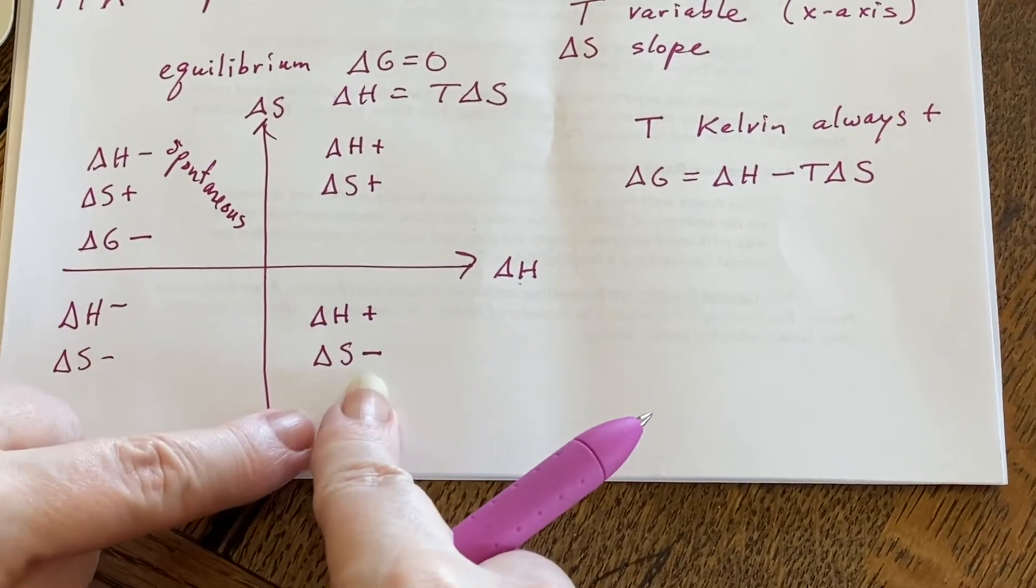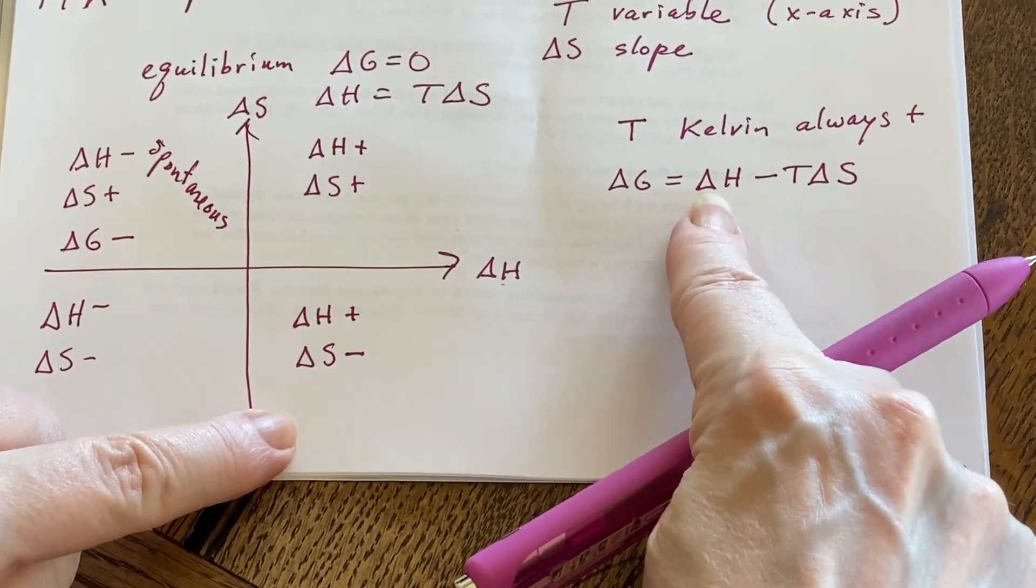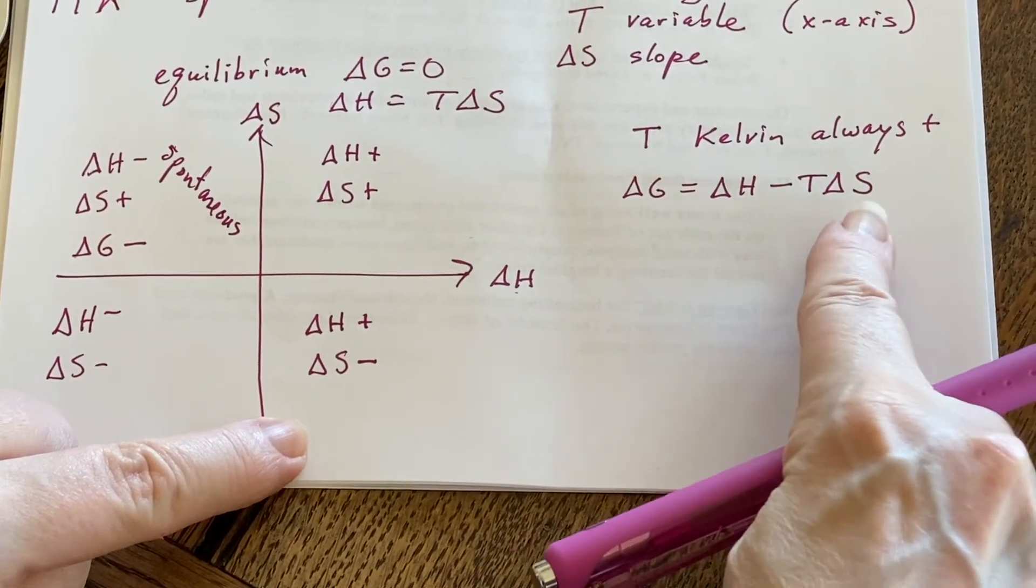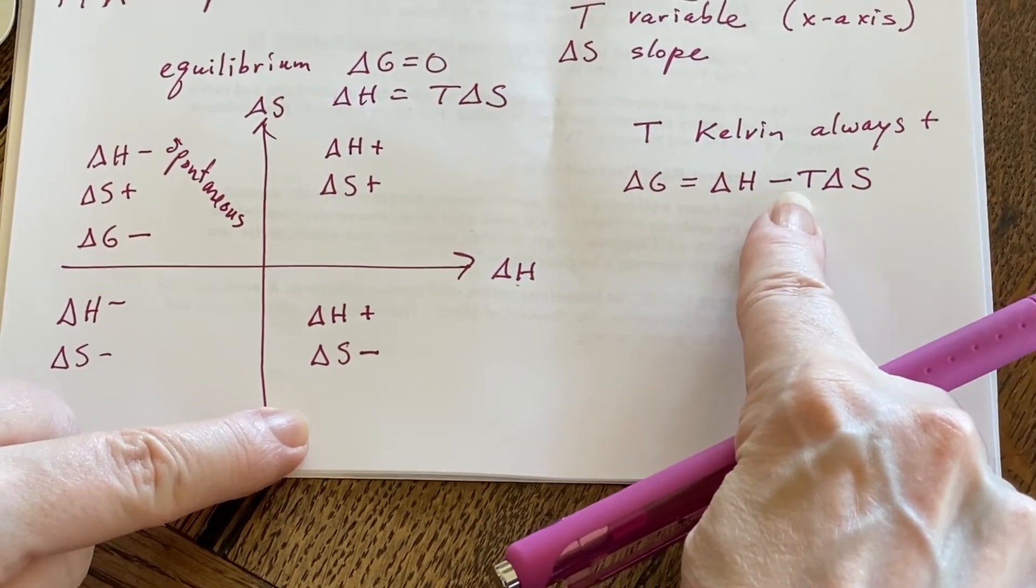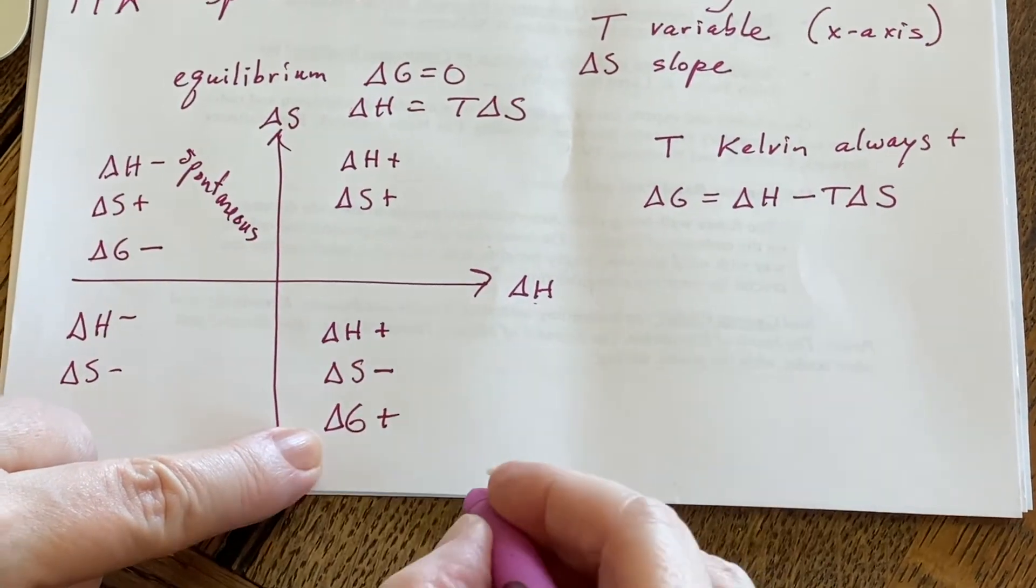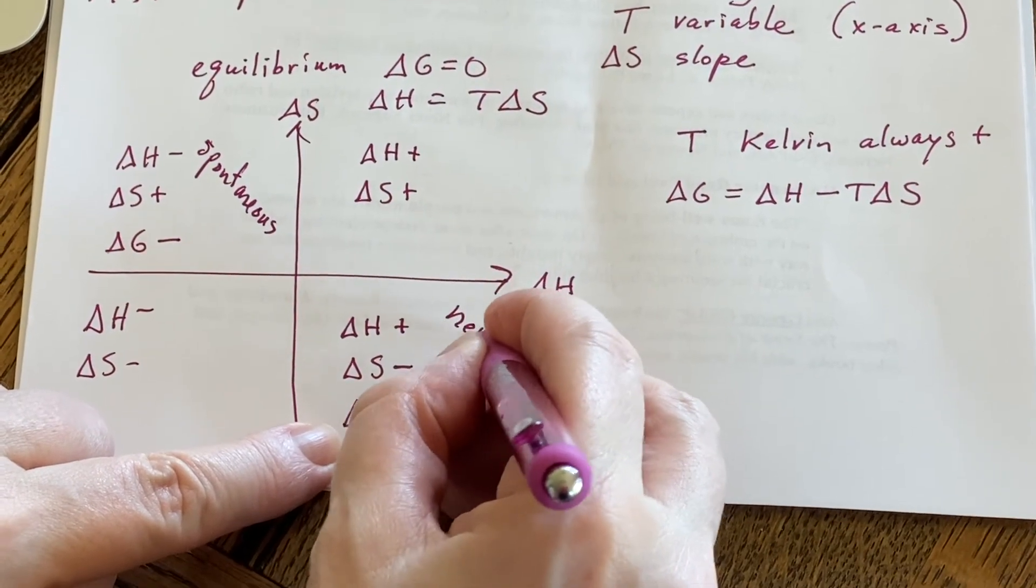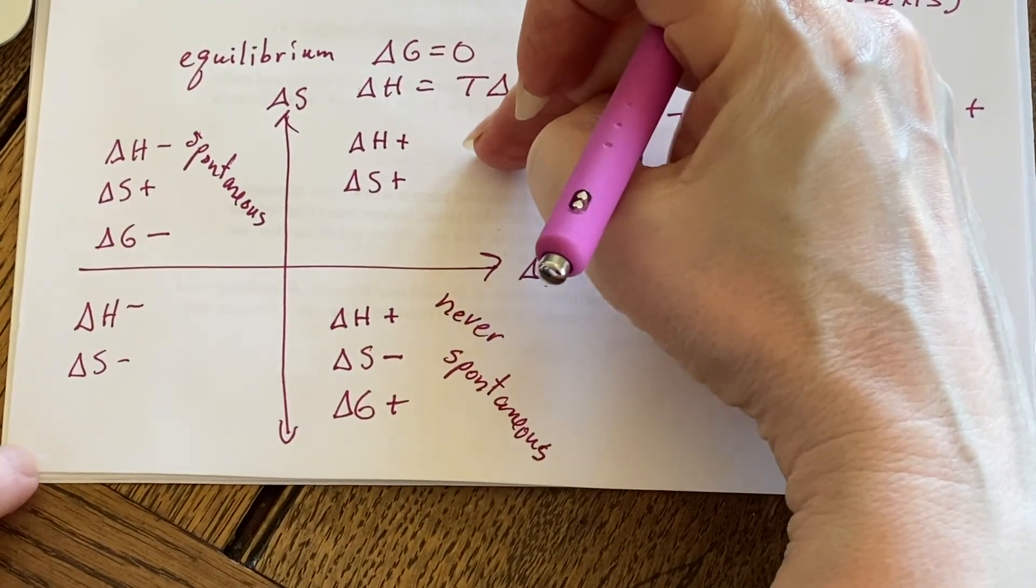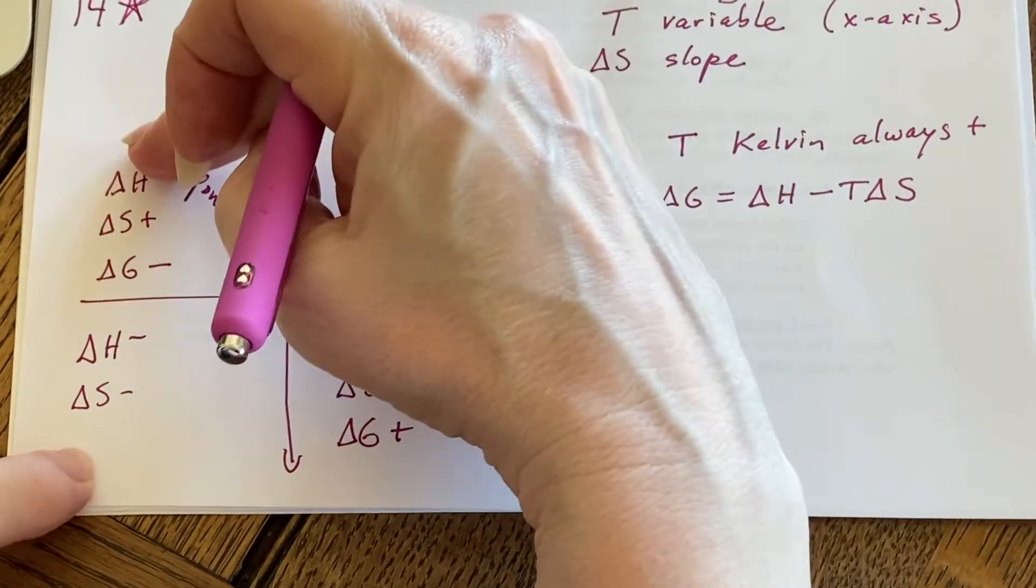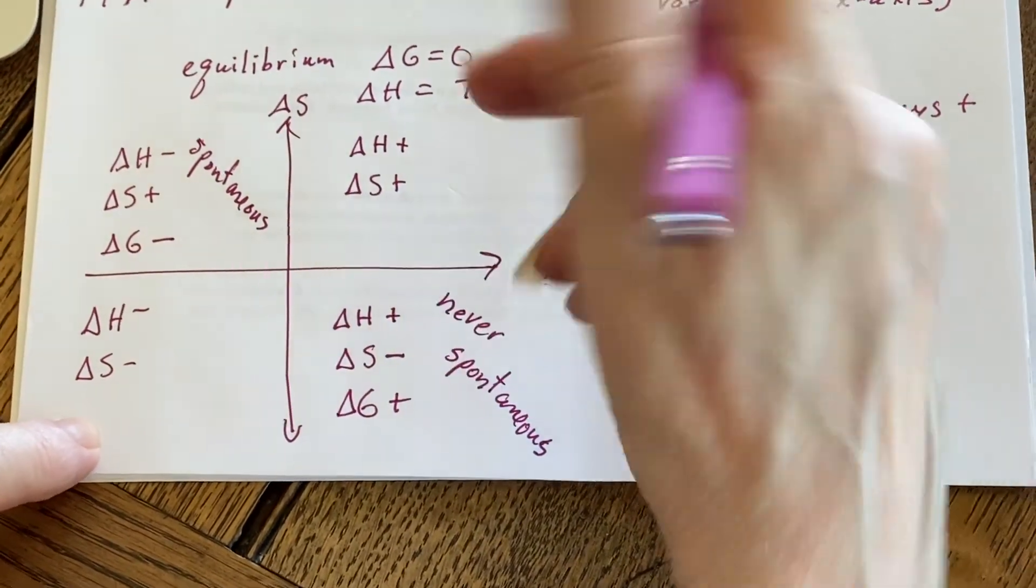Let's look at this one then, down in this quadrant. Delta H is positive. Delta S is negative, but I'm multiplying it by negative. So it's also positive. So delta G is always going to be positive here. And that means this is never spontaneous. These two, I'm going to have some control over it. Spontaneous, never spontaneous, but there's going to be some sort of a crossover temperature.